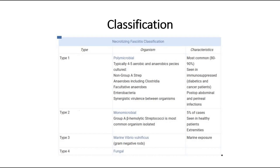Type 2 is monomicrobial, where group A hemolytic strep is the most common organism, seen in five percent of cases. Type 3 is due to marine Vibrio vulnificus due to marine exposure, whereas Type 4 is fungal in cause.